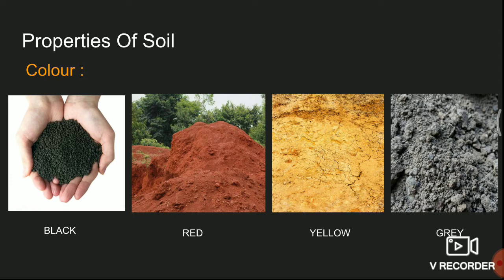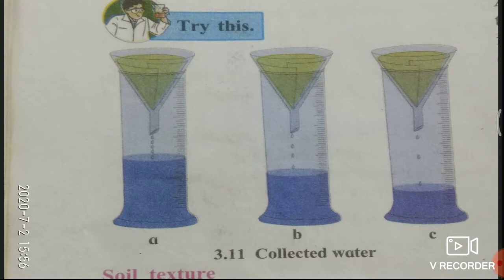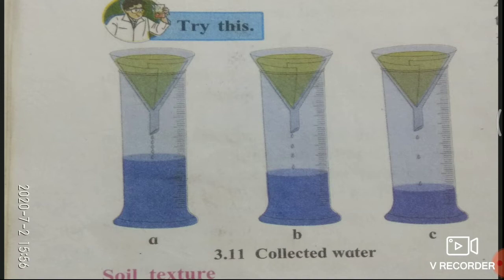Before going to the second property, we have to observe one activity. For that, we need three measuring cylinders, three glass funnels, filter paper, water, fine sand, coarse sand, and soil from an earthen pot used for growing plants. Then, make cones of the filter paper and fit them in the glass funnels. Fill the cones with equal quantities of sand.